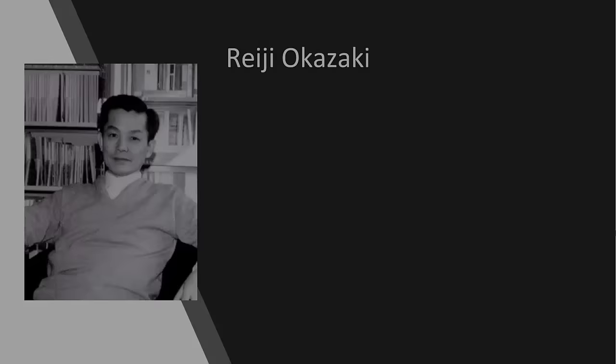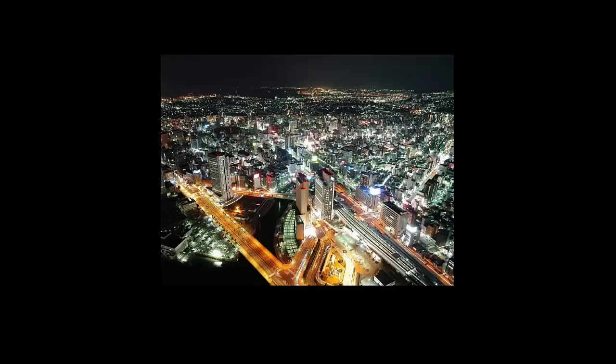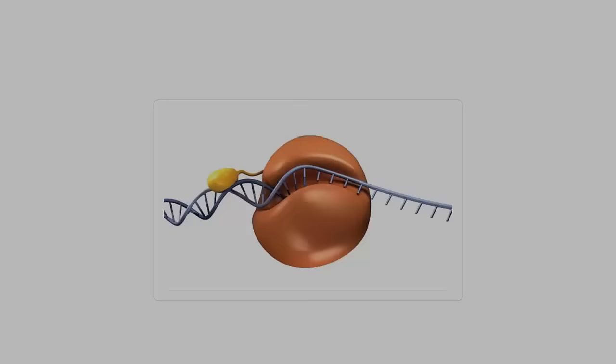Okazaki Fragments. This is Reiji Okazaki. He was a molecular biologist born in Hiroshima in 1930. He is known for discovering the way in which the lagging strand of DNA is replicated.